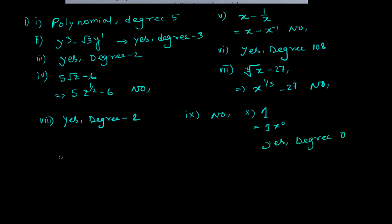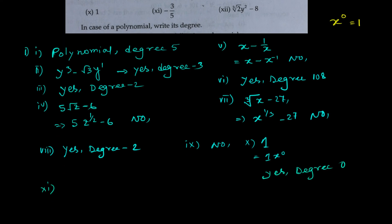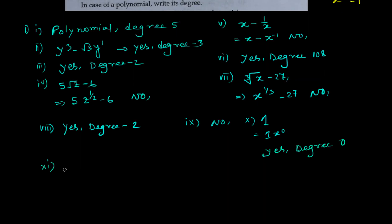The eleventh one is given as minus 3 by 5. We can write it as minus 3 by 5 times x to the power 0. So yes, it is a polynomial and the degree will be 0.